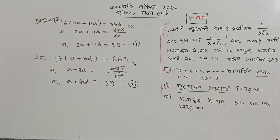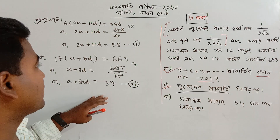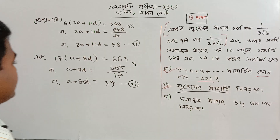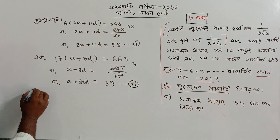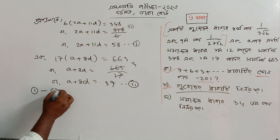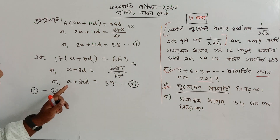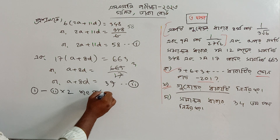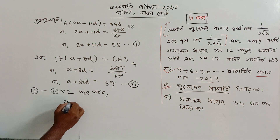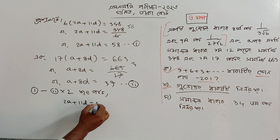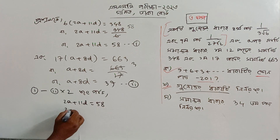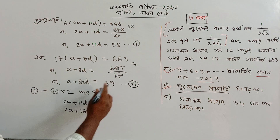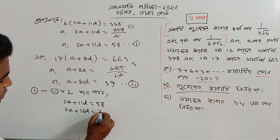So I am going to write two numbers. It means that 2A plus A, D is equal to 58, and 2A plus 16D is equal to 8.